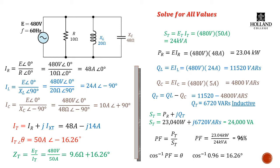So what do you need to take from this review? When we're in parallel, the easiest thing to do is add up the currents. Find each individual component current, then vector sum the currents. You can use that to find your total impedance or your total apparent power. As with any circuit, powers always add, so you can also find your individual powers and vector sum those. Power factor is always your true power over your apparent power as a representation of efficiency. With all that in mind, let's see how these principles apply to an RLC three-phase circuit.